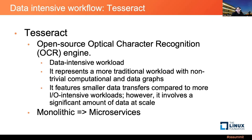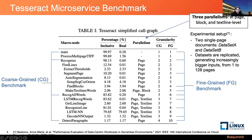We start with a data intensive AI benchmark workload called Tesseract, an open source optical character recognition engine. It operates on images, which is data intensive, and involves many stages and tasks with non-trivial computational and data graphs. We first converted this workflow from monolithic to microservices. The coarse-grained benchmark presents pages of documents in five different microservices, while we also partition Tesseract into 11 microservice deployments as a fine-grained benchmark.